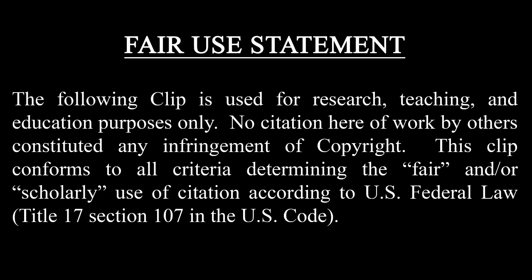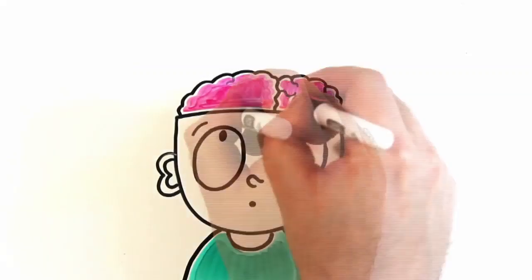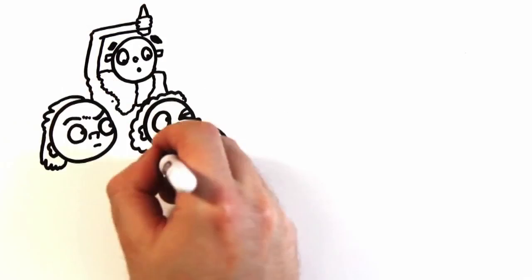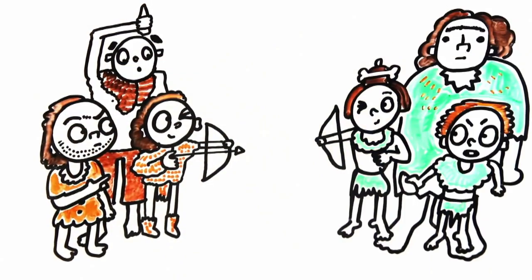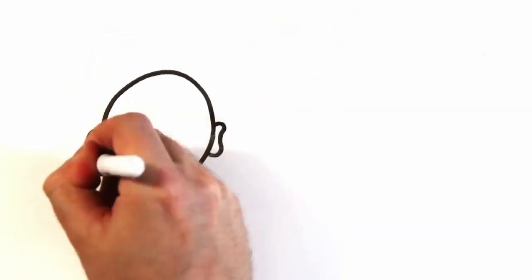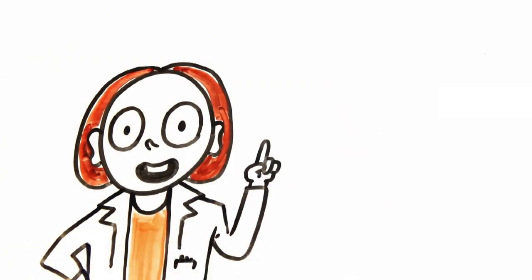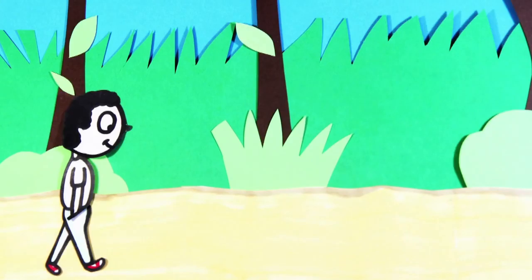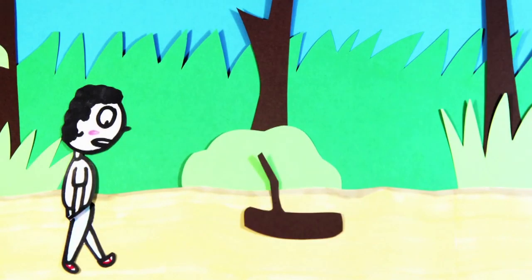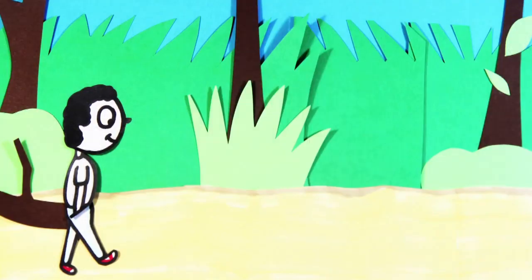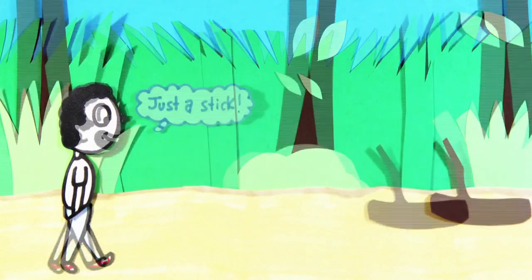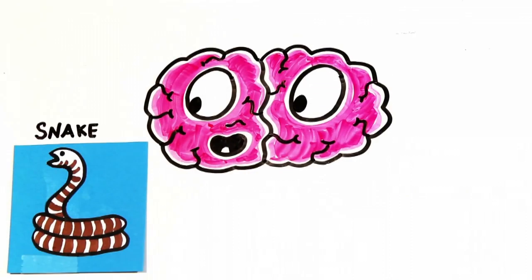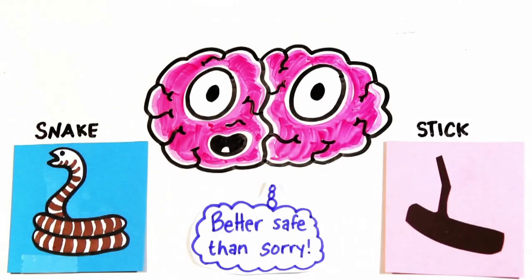I also want to direct you to another video — linked in the description — about the real reason why conspiracy theories work. It discusses something called the adaptive conspiracism hypothesis: our ancient ancestors, when it came to self-preservation in the wild, found it more advantageous to utilize a pseudoscientific method — looking for information proving the hypothesis that something is dangerous — than to use a scientific method and try to falsify that hypothesis. The hypothesis is essentially: if you're walking in the jungle and see a snake but it's actually just a stick, that's embarrassing, but you're still alive. But if you see a stick and it's actually a snake, you step on it, it bites you, now you're dead. This explains how our brains have been programmed into thinking 'better safe than sorry' when it comes to survival.